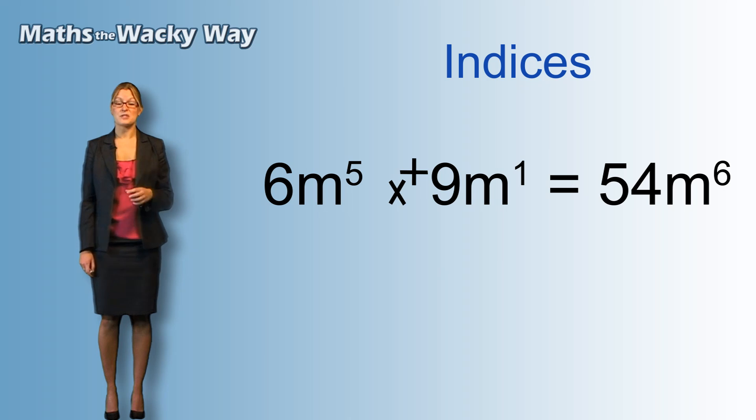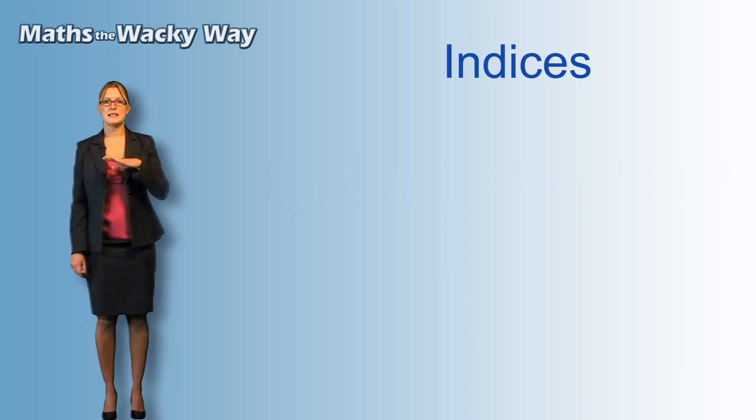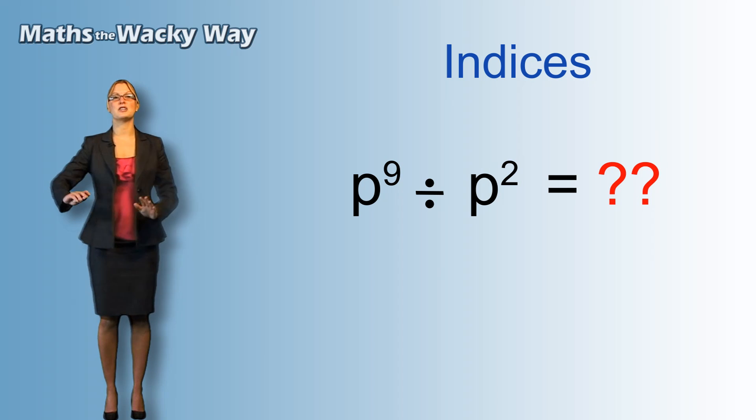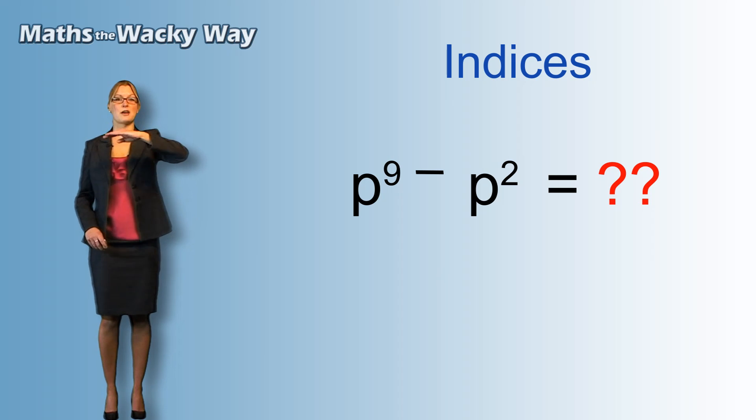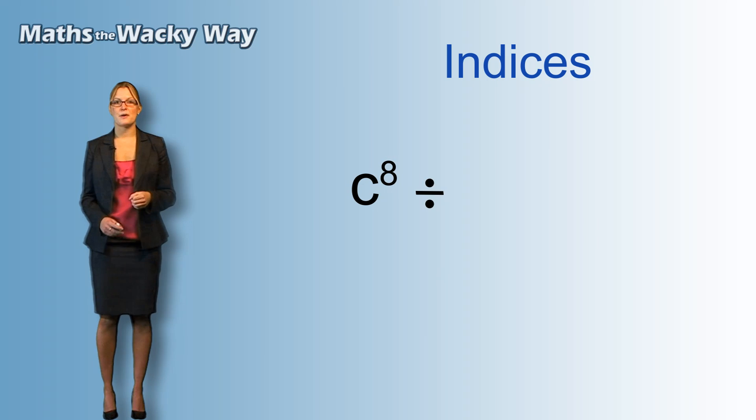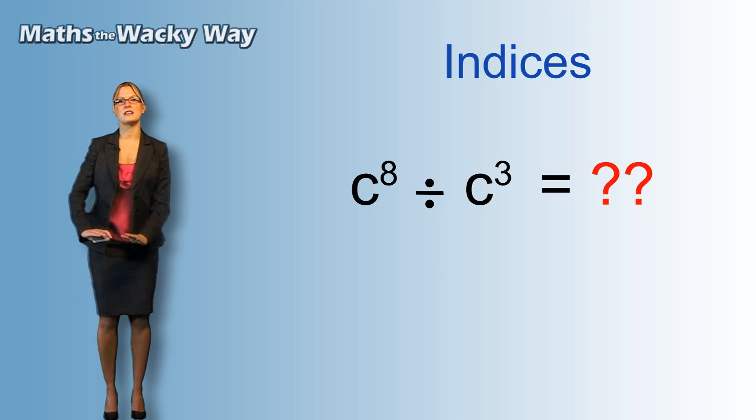Now so far we've only looked at multiplication. Let's have a look at division. Similar rules here. If we had p to the 9 divided by p to the 2, where we have a division sign down here on this level, it's going to go up in the air and it's windy, so what's going to happen? It's going to lose its dots. So what was a divide down here will become a subtract up here. So we have p to the 9 divided by p to the 2, that's going to give us p to the 7, because we end up with 9 take away 2 up the top there. Let's run through another one: c to the 8 divided by c to the 3. Again, the divide goes up in the air and loses its dots, we end up with c to the 5.